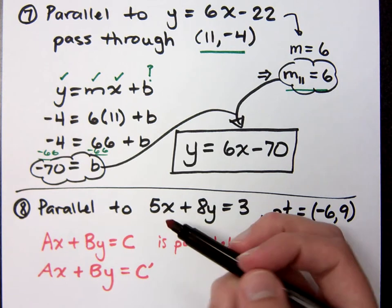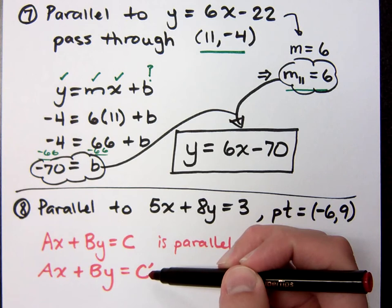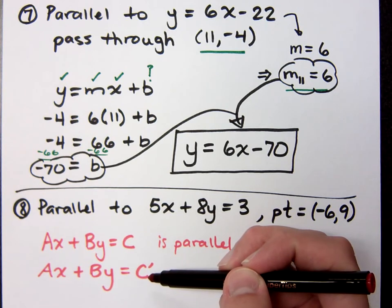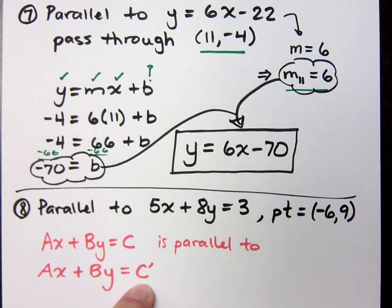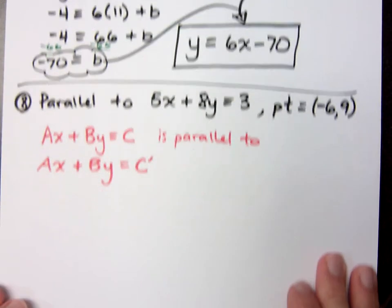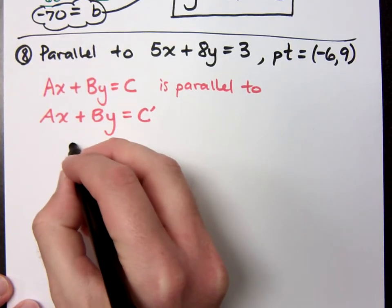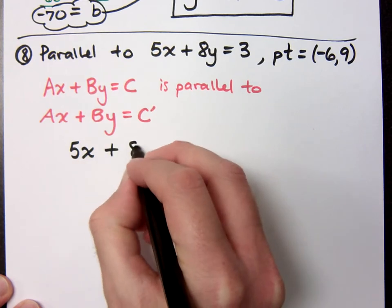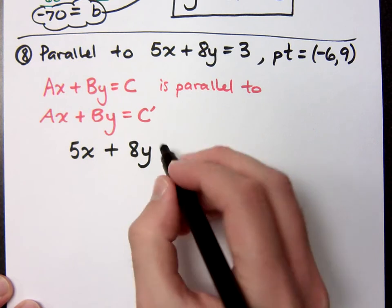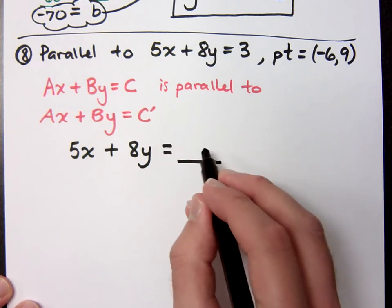But I need to have different y-intercept value, right? Well, if this C is different from this C prime, then these guys will be parallel. The trick for us is trying to figure out, well, what's this constant supposed to be? So here's what I'm saying. I'm going to make this claim. I claim that if I'm going to be parallel to 5x plus 8y, then I'm going to start off as 5x plus 8y. I just have to figure out what's that number.